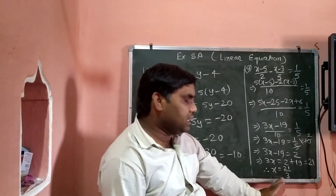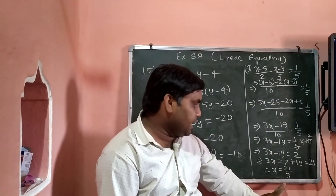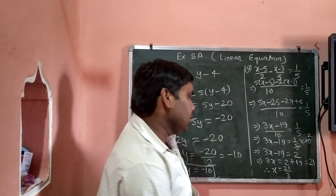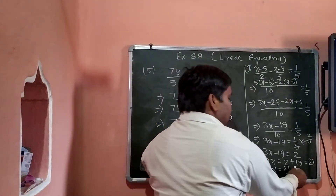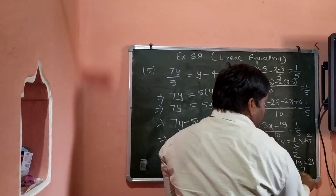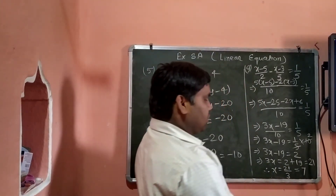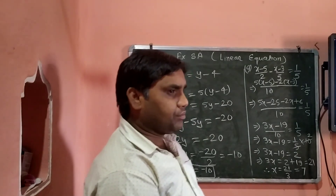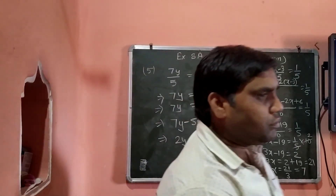x equal to 21 by 3. 21 को 3 से divide करेंगे तो x equal to 7.